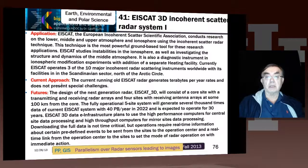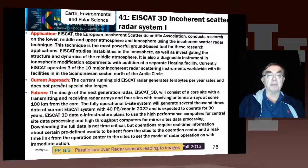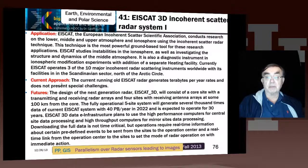We start off with ISCAT, which is a facility being built in the Nordic regions. It's basically a scattering radar in the atmosphere, measuring what happens and using that to investigate the dynamics and structure of the atmosphere. Currently it operates ten radar scattering instruments.